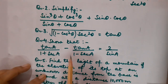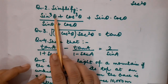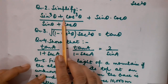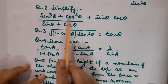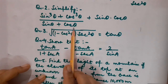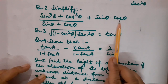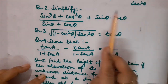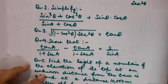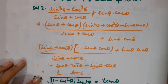Now children, this is question number 2: simplify (sin³θ + cos³θ) / (sin θ + cos θ) + sin θ · cos θ. We have to simplify this expression and calculate its value. Children, please cross-check your solution.